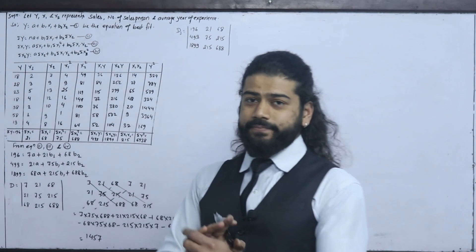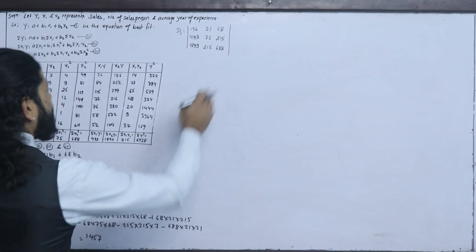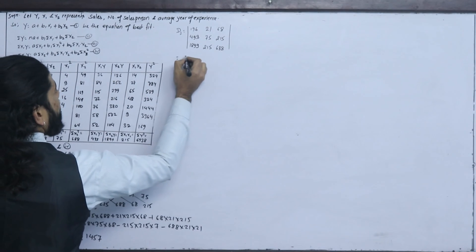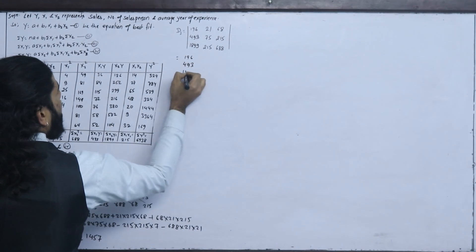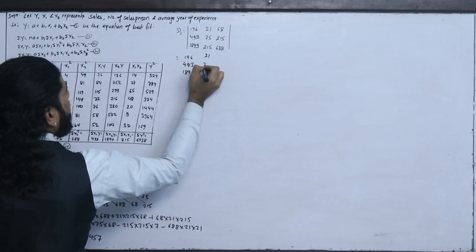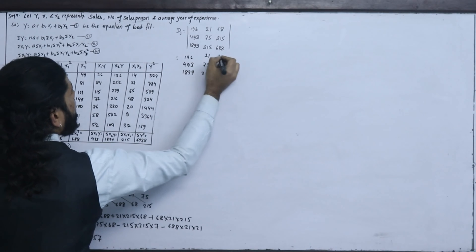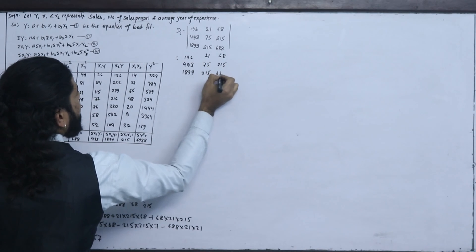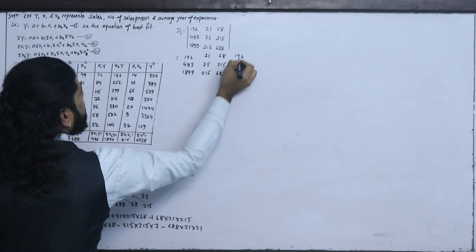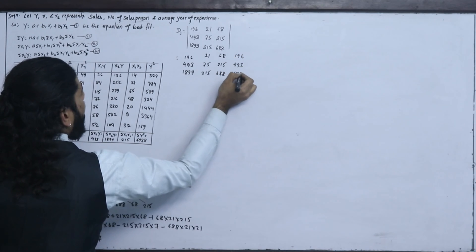Now we have to compute the determinant. The numbers in the determinant are: 1964, 931, 899; then 21, 75, 215; then 68, 215, 688; and also 196, 493, 1899.